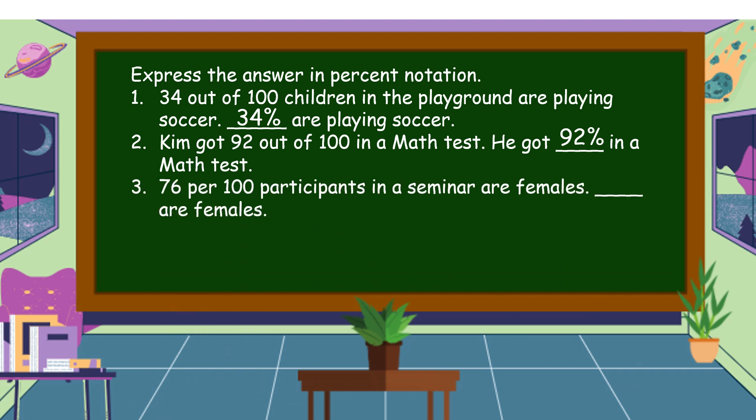Next number: 76 per 100 participants in a seminar are females. In percent notation, the answer is 76 percent. You get the correct answer.